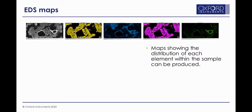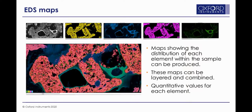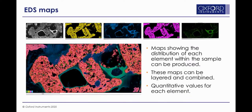We can convert this information into maps displaying the distribution of elements across the sample. Here's an example with several different maps — a lower magnification image of the example shown at the start of the presentation. You can see the relative different intensities of signal across the area being scanned. These individual maps each show the distribution of a single element, and they can be combined with the electron data to produce a multilayered map. Each image contains quantitative values for each element at each pixel position, allowing you to revisit the data and obtain quantitative values at any point within the software.